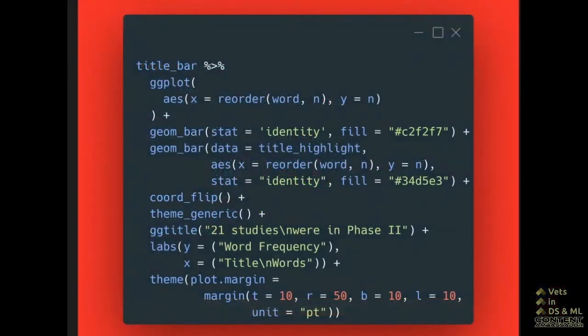As we go to here with my title underscore bar chart here, this is going to be piped into all the Gigi Plot elements. And as you can see, the way that I call theme generic is pretty simple, the same way that you would call any other theme.